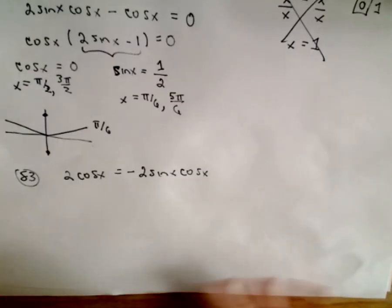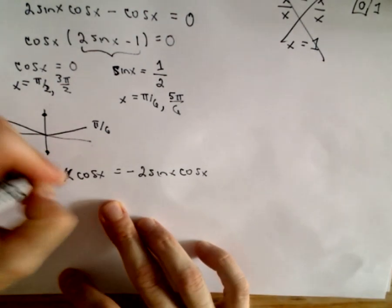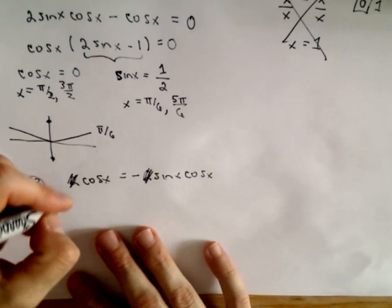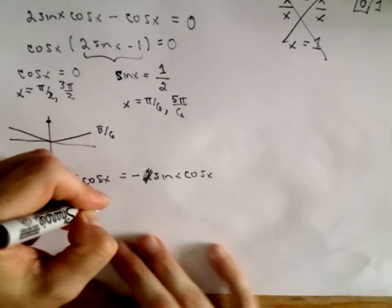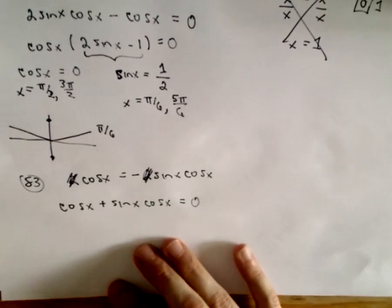We could certainly divide both sides by 2 - that's a nonzero number, so no trouble there. So I'm just going to get rid of the 2's. If we divide both sides by 2, they're gone, and now I'm just going to add. I'm going to have cosine x plus sine x times cosine x equals 0.